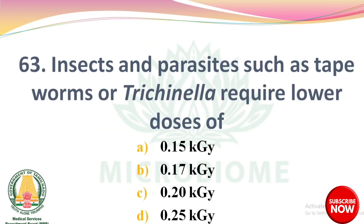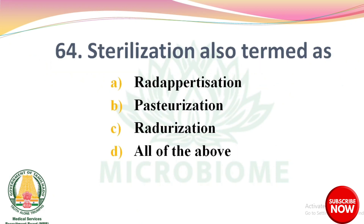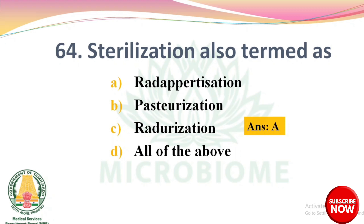Next question: insects and parasites such as tapeworms or Trichinella require lower doses of options: 0.15 kGy, 0.17 kGy, 0.20 kGy, 0.25 kGy. The right answer is Option D: 0.25 kGy. Next question: sterilization is also termed as options: radappertisation, pasteurization, radappertisation, all of the above. The right answer is Option A: radappertisation.